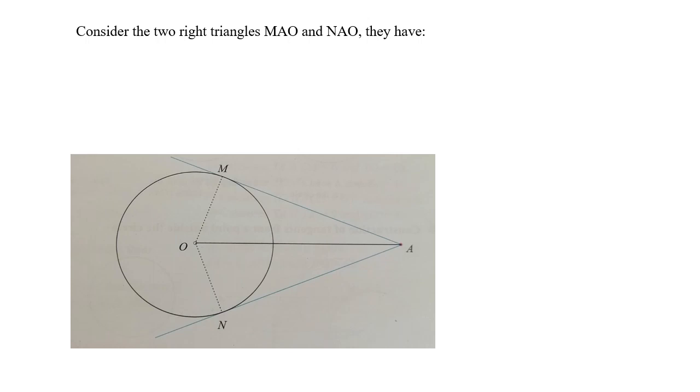So we are going to solve an exercise on the same figure. Point A is an exterior point. Two tangents are issued from point A. The first tangent cuts the circle at point M.